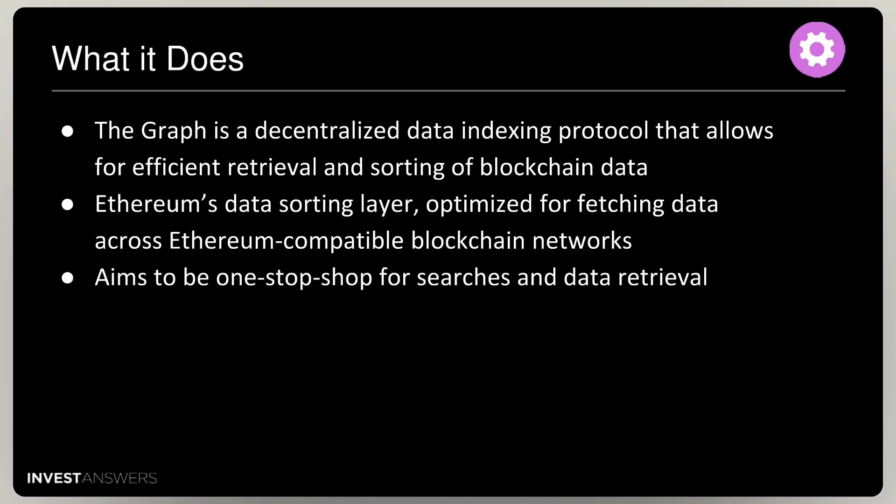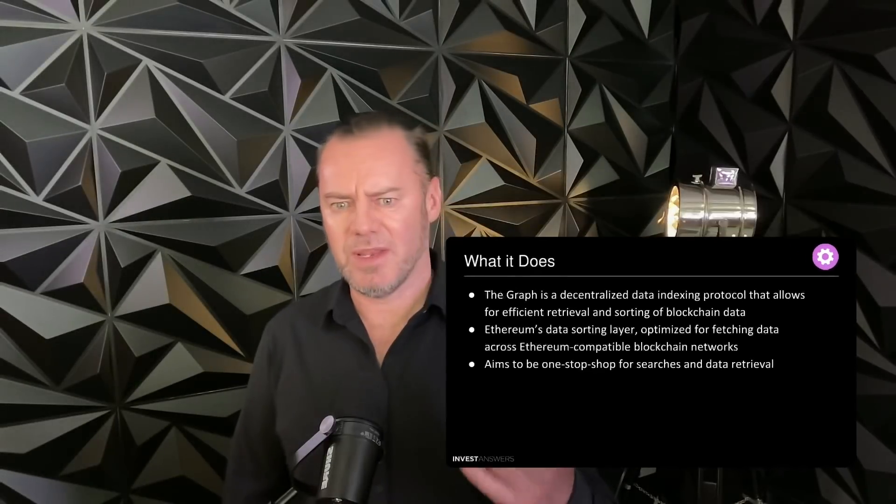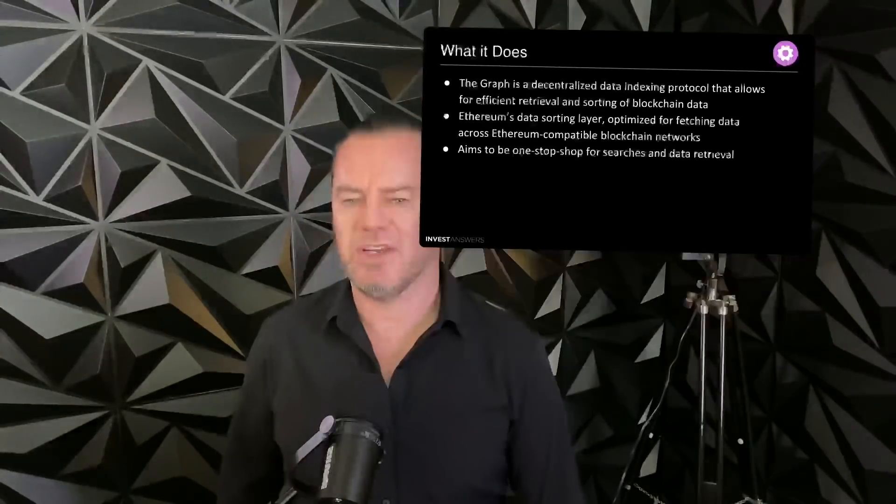The TLDR of all of this is: think what Google does for the internet — this is what The Graph does. Basically, it indexes data across different blockchains. It's like an Ethereum data sorting layer, and it's a one-stop shop for searches and data retrieval to really help people build dApps on the blockchain.